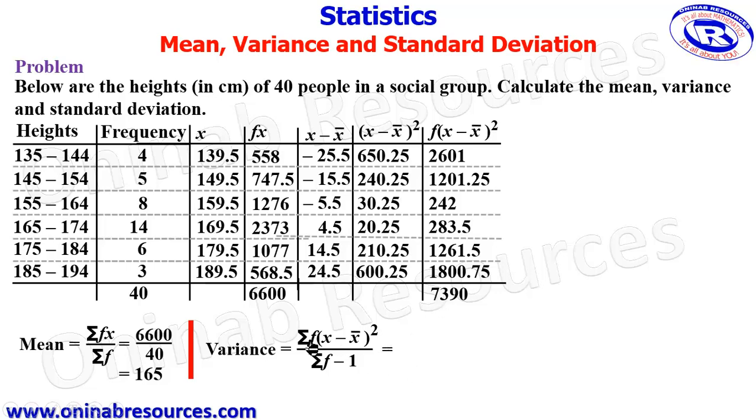Now substitution: the summation of f(x - x̄)² is 7390, then 40 minus 1, because summation of f is 40 minus 1 gives 39. So we have 7390 divided by 39, and this gives 189.49, which represents the variance of the distribution.